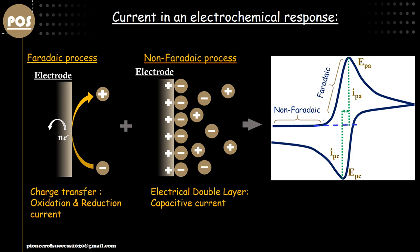Along with the faradaic component there could be a non-faradaic component, and one of the non-faradaic components is charging current. The electrodes used in any electrochemical operation are basically charged electrodes — they have a surface charge. For example, an electrode with a positive charge attracts oppositely charged ions towards the interface — negatively charged ions, anions, come towards the electrode forming a preferential layer onto the electrode surface. This process is called charging, and during this charging a current alteration happens called the charging current.